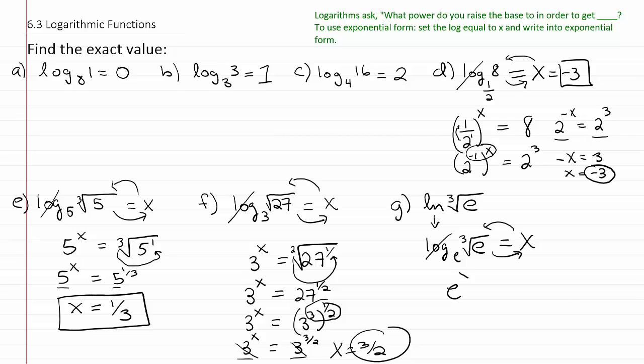So we say e to the x is equal to the 3rd root of e. And as you know, we can rewrite that 3rd root of e as e to the 1 3rd. And so then basically we have a common base. So the exponents therefore must be equal. So x must be equal to 1 3rd.